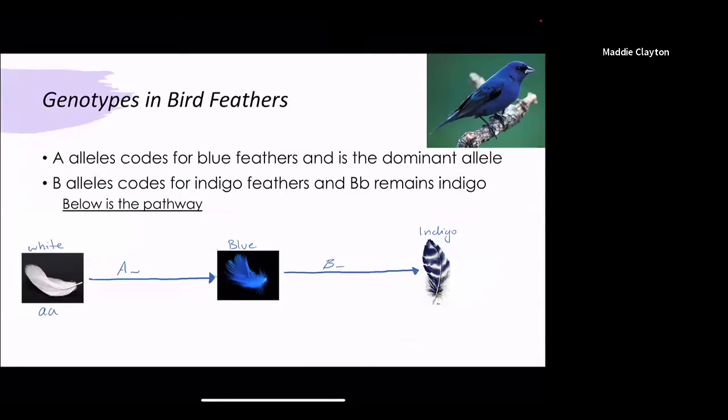The A allele will code for blue feathers and it is dominant. So as long as you have a big A then you will have blue feathers. If you have the B allele which codes for the indigo feathers then they will go to indigo as long as you have a dominant B. So if you have a dominant A and a dominant B it will follow that path all the way to being an indigo feather.